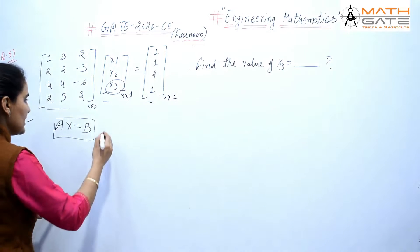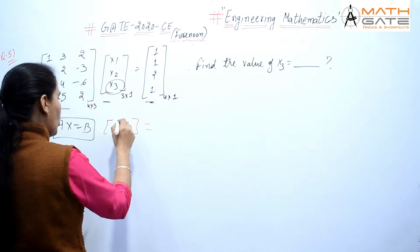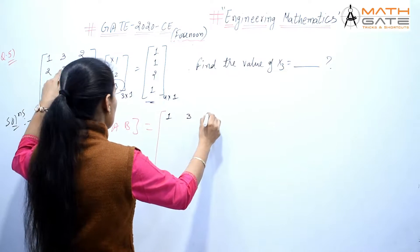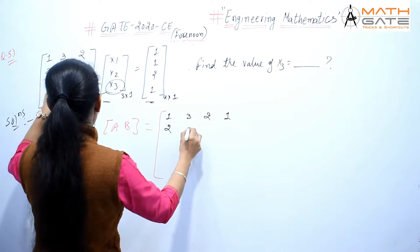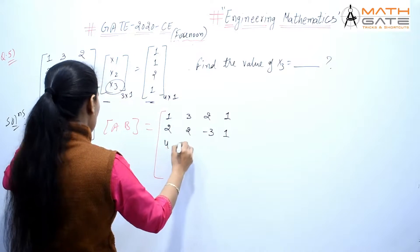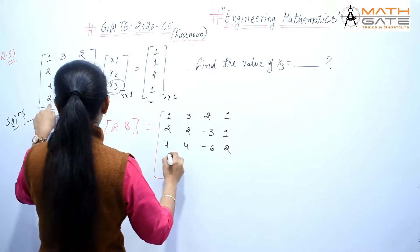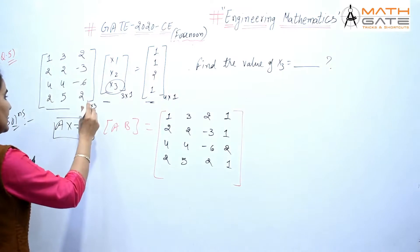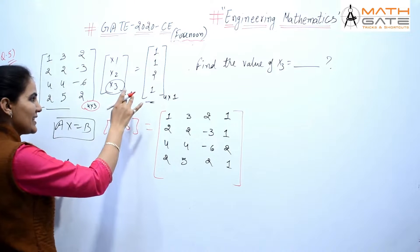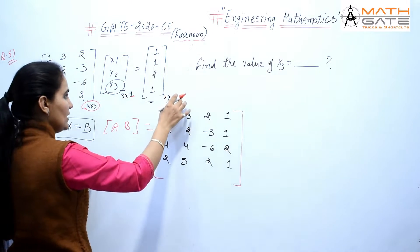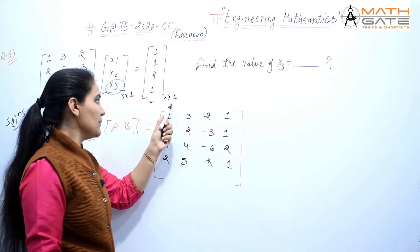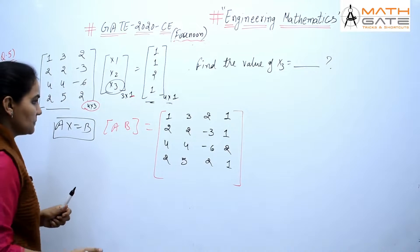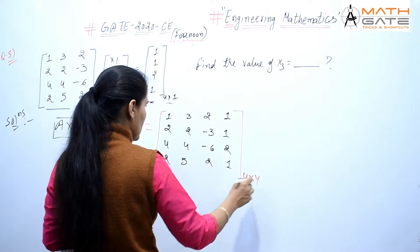We write the augmented matrix [A|B]. The matrix A has order 4×3, the variable matrix X is 3×1, and the constant matrix B is 4×1. The entries are: row 1: 2, 2, -3 | 1; row 2: 4, 4, -6 | 2; row 3: 1, 3, 2 | 1; row 4: 2, 5, 2 | 1. So the augmented matrix [A|B] is 4×4.